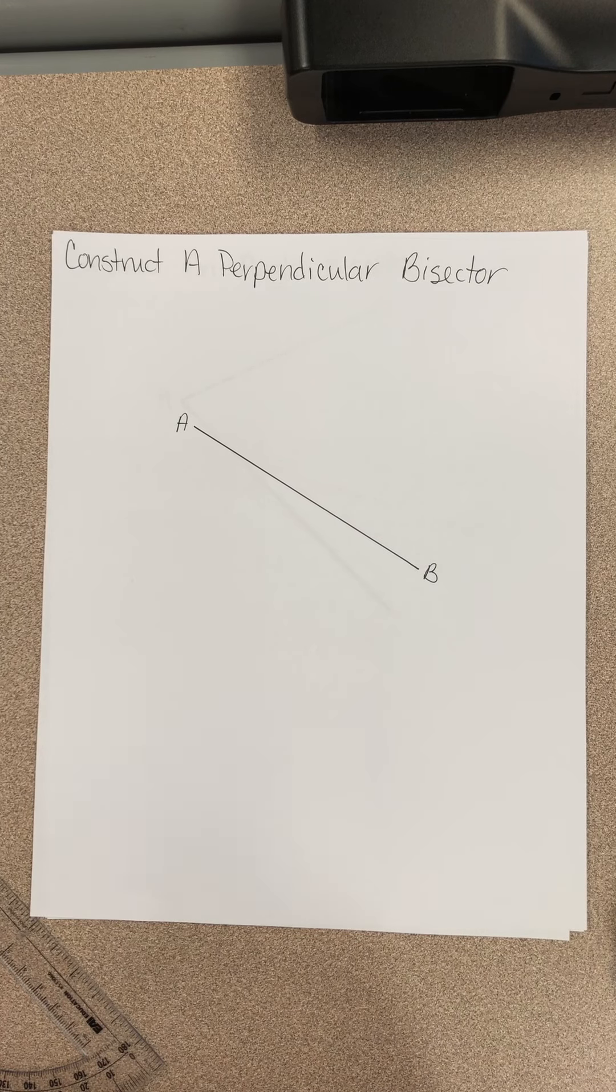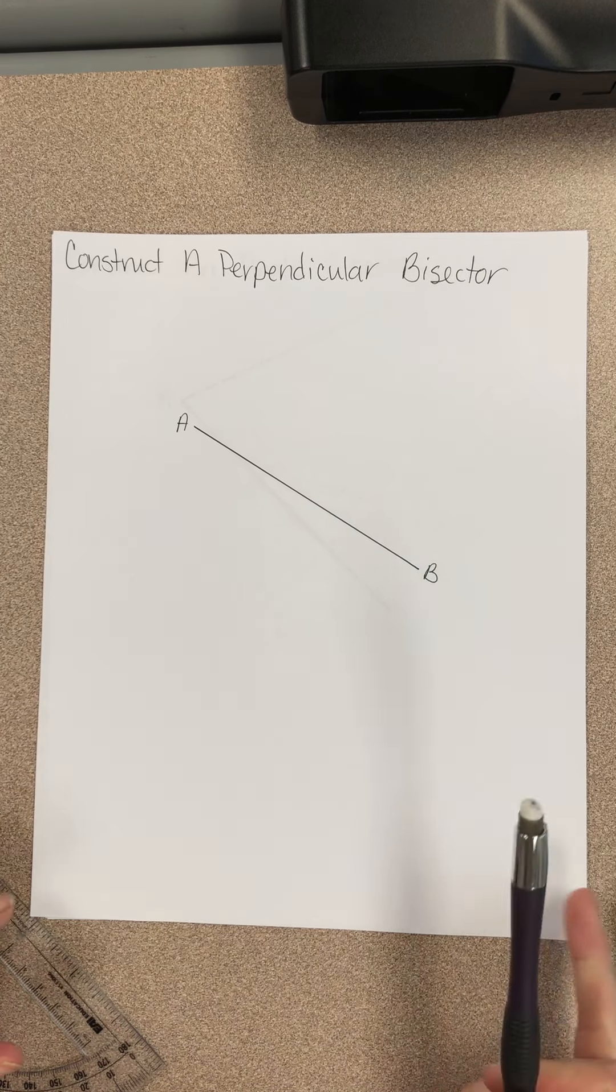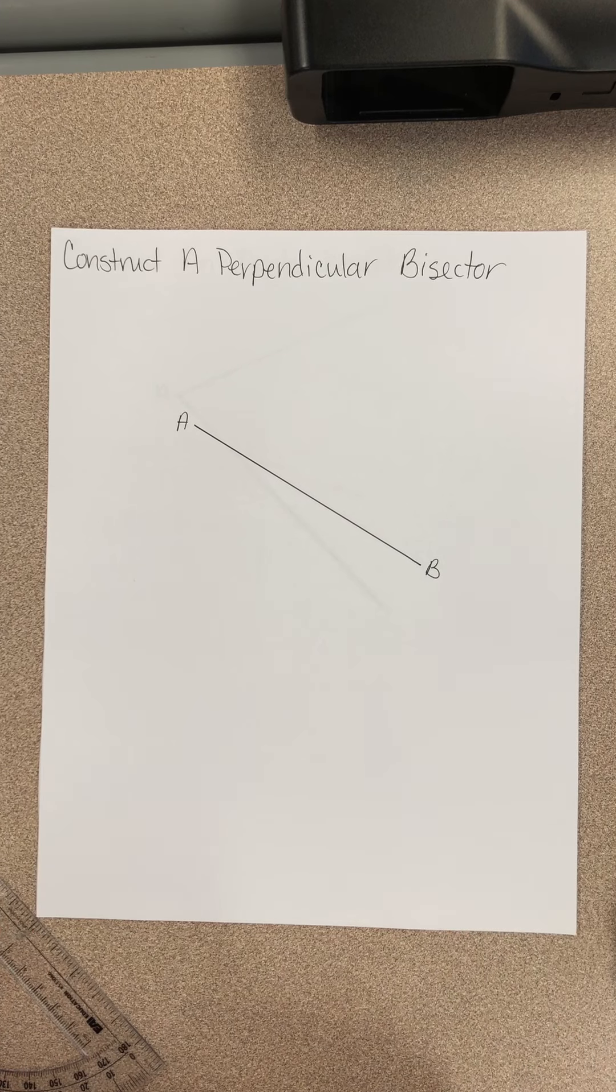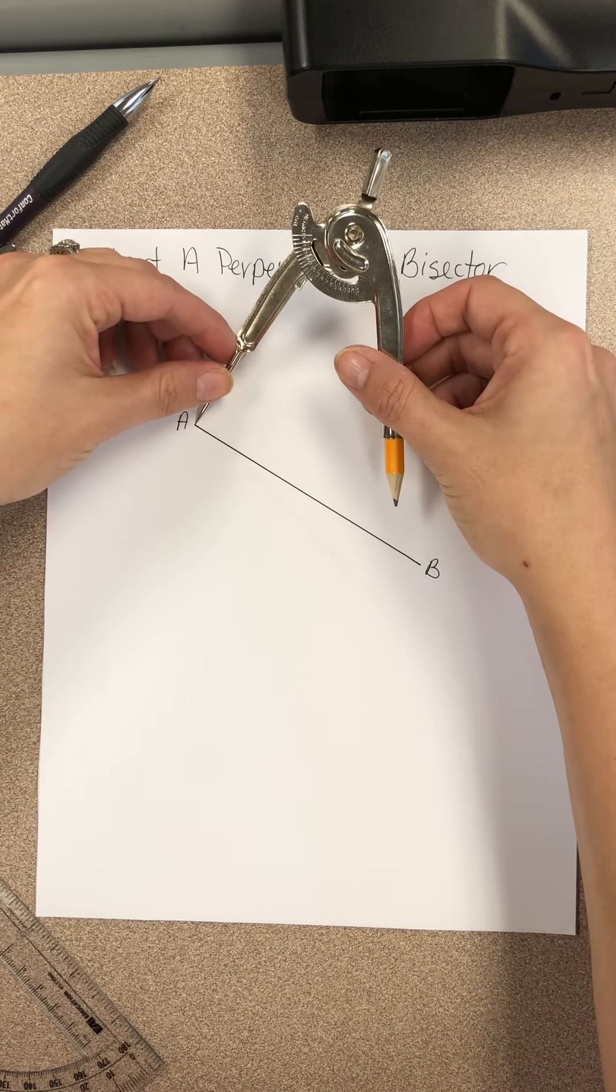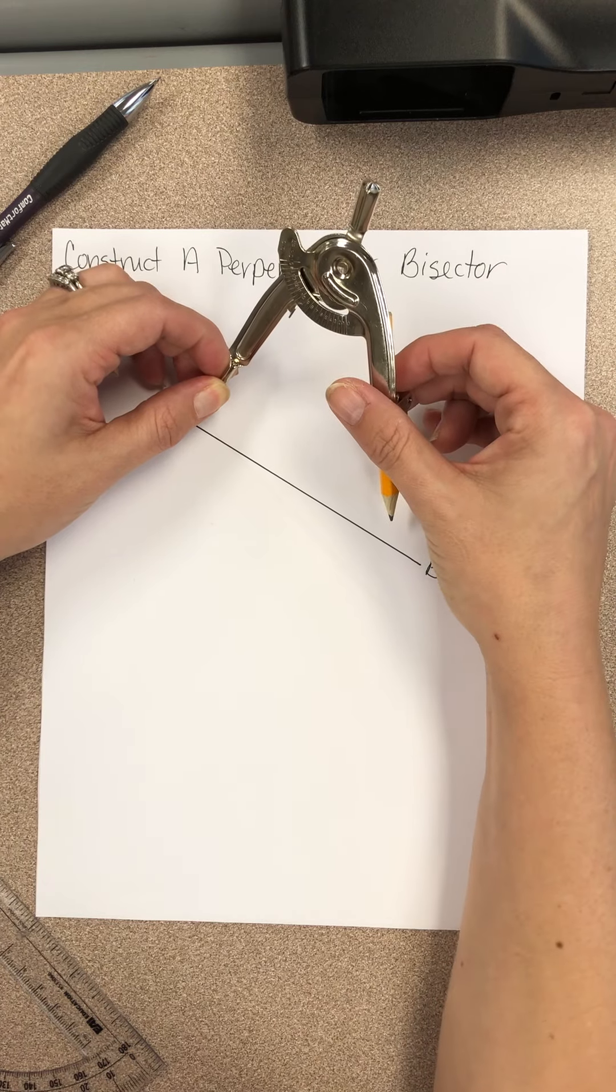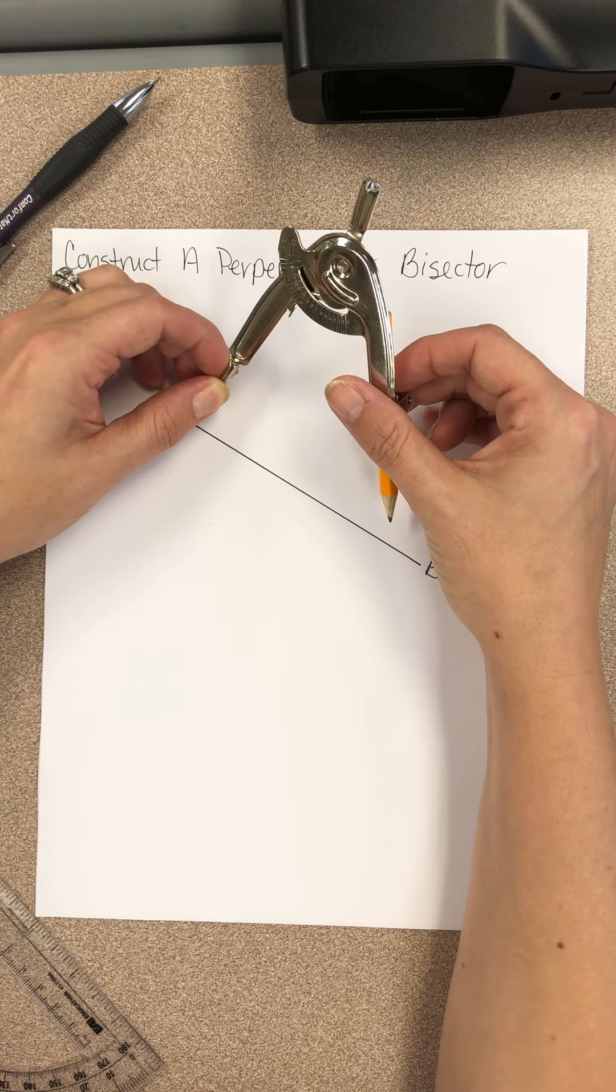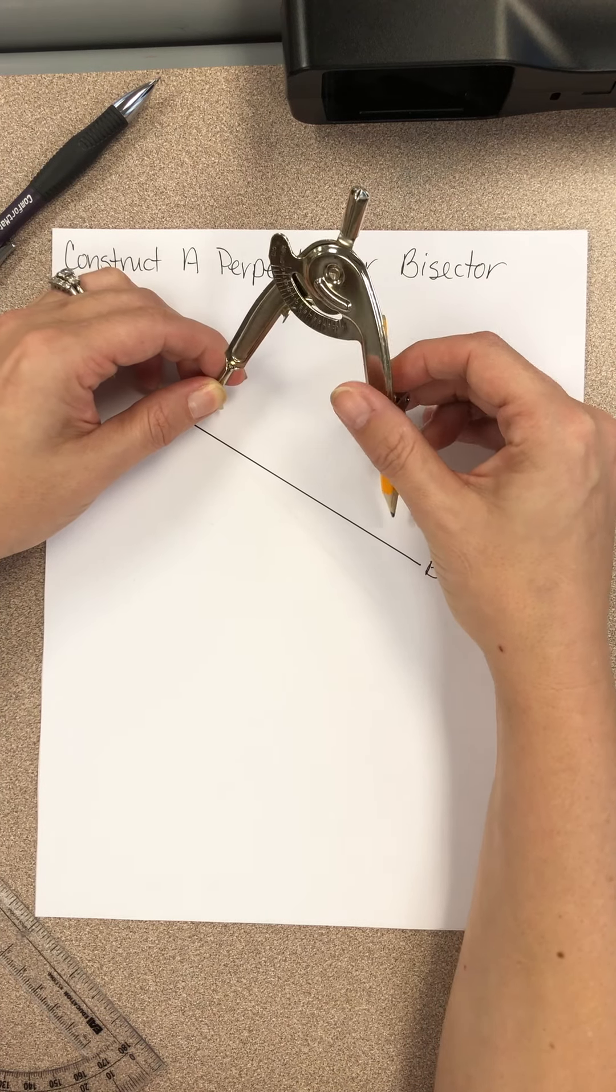I'm going to teach you how to construct a perpendicular bisector. In your notes it says to place the needle of the compass on point A. So I'm going to put it on point A. And then it says to extend the pencil over half the distance of AB.